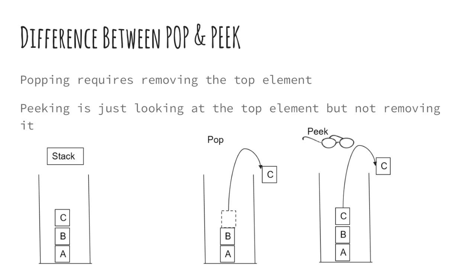Stack has two operations for retrieving a data element: pop and peek. Both operations access the data element at the top of the stack, but there is a difference. The pop operation will retrieve the data item by actually removing it from the stack, causing the top of the stack to be modified to point to the next topmost element. On the other hand, the peek operation will only access the topmost element without actually removing it from the stack. Thus, peek will not modify the stack or the stack top.